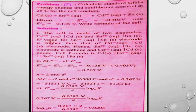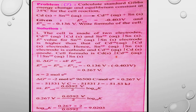The formula for standard Gibbs energy change is: ΔG° = −nFE°_cell, where n is the number of moles of electrons, F is Faraday's constant (96,500 C/mol), and E°_cell is the standard EMF. Here n = 2.